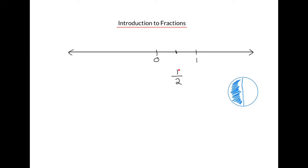In other words, we've covered one half of the circle, and the mark on the number line is one half of the way between 0 and 1. One half is a fraction, and fractions consist of a numerator, or the top number, and a denominator, or the bottom number.